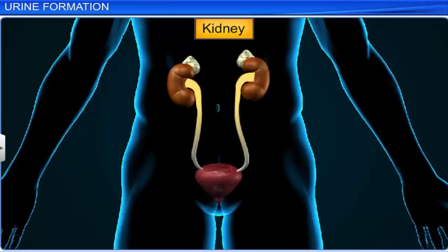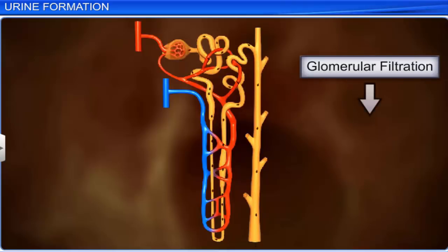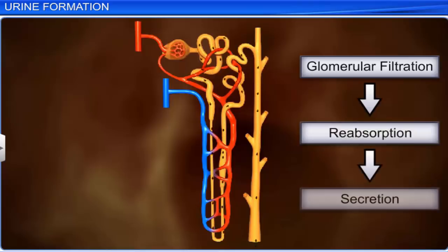The kidney is the major excretory organ in humans, and one of its primary functions is urine formation. Each kidney contains about a million nephrons, which are the basic functional units of the kidney and help in urine formation. Urine formation involves three major processes: glomerular filtration or ultrafiltration, reabsorption, and secretion.